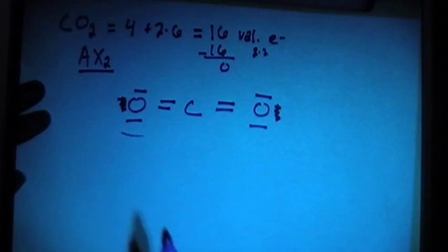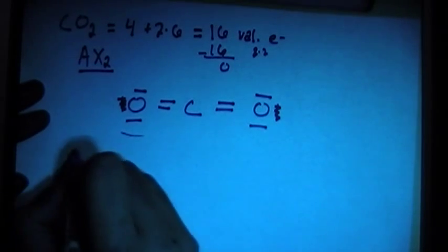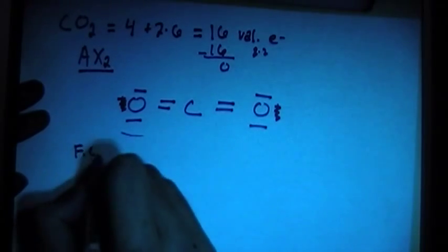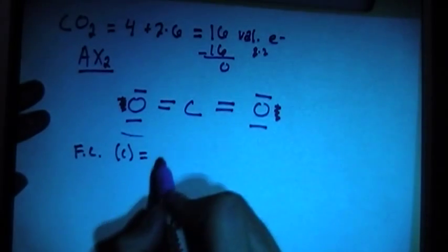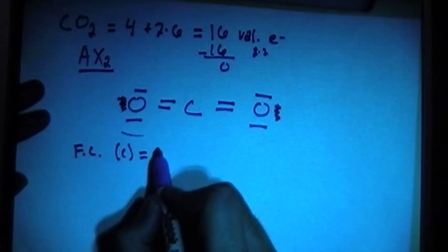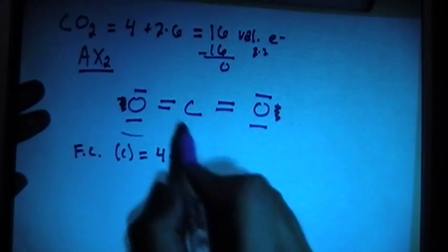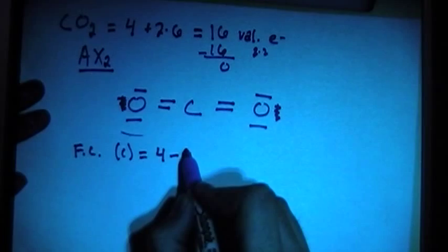So this should be the right structure. So let's go ahead and check the formal charges. The formal charge of the carbon in the center—remember, formal charge is the number of valence brought in. So that's 4 minus the number of bonds, 1, 2, 3, 4. Remember, double bonds do not count as 1.